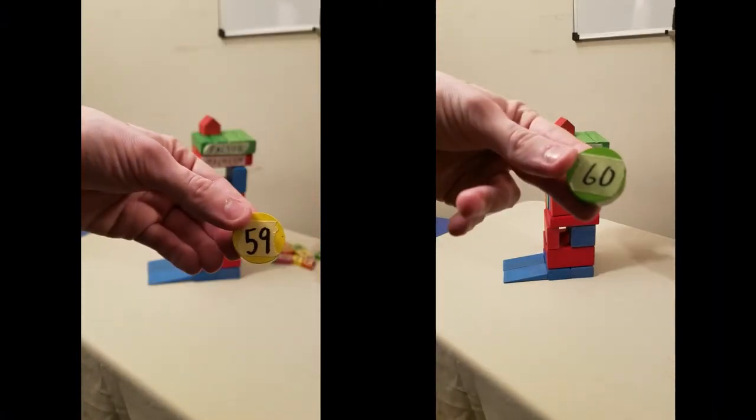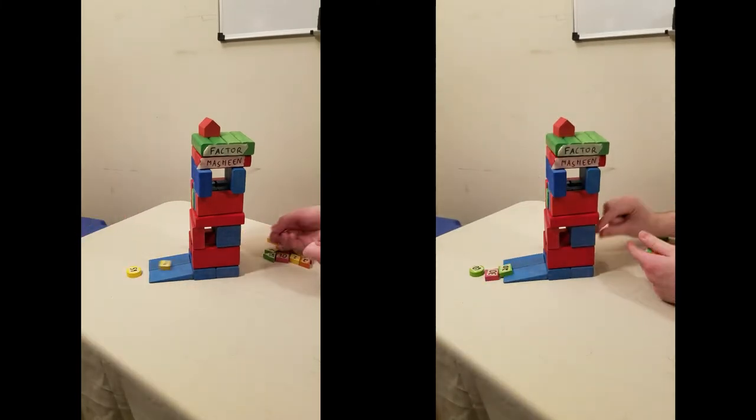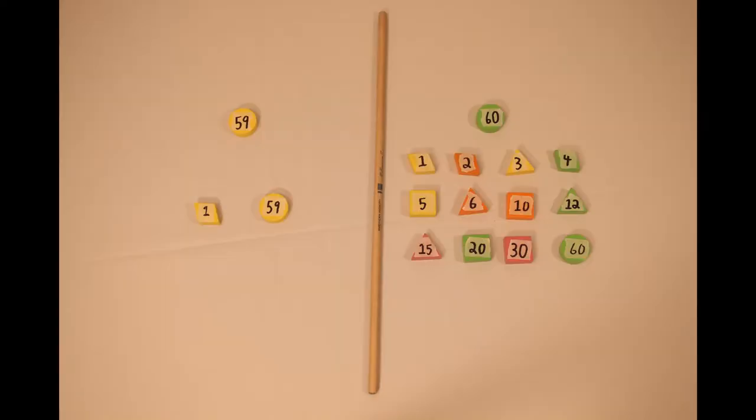Here we have 59 and 60. Now 59 is a prime, while 60 is not, so 59 will only have two factors, while 60 will have many more. But let's take a closer look at the factors themselves. With 59, we only have the smallest possible factor, 1, and the largest possible factor, 59. But 60's factors cover much more of the range between 1 and 60. In the case of 59, we get 60, which is barely larger than the original number. But with 60, the sum of the factors is 168, almost three times the original number.